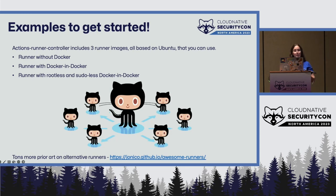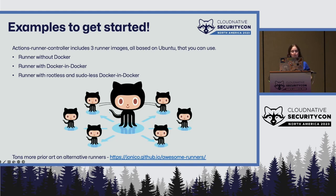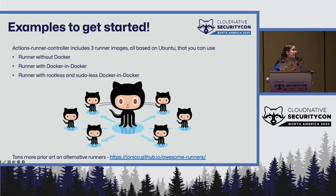Here are some examples to get you started. Actions Runner Controller currently builds three runner images, all based on Ubuntu: a runner without Docker, a Docker-in-Docker runner, and the rootless and sudo-less Docker-in-Docker runner. At the very bottom there is a link with tons of other community projects where people have built their own images.